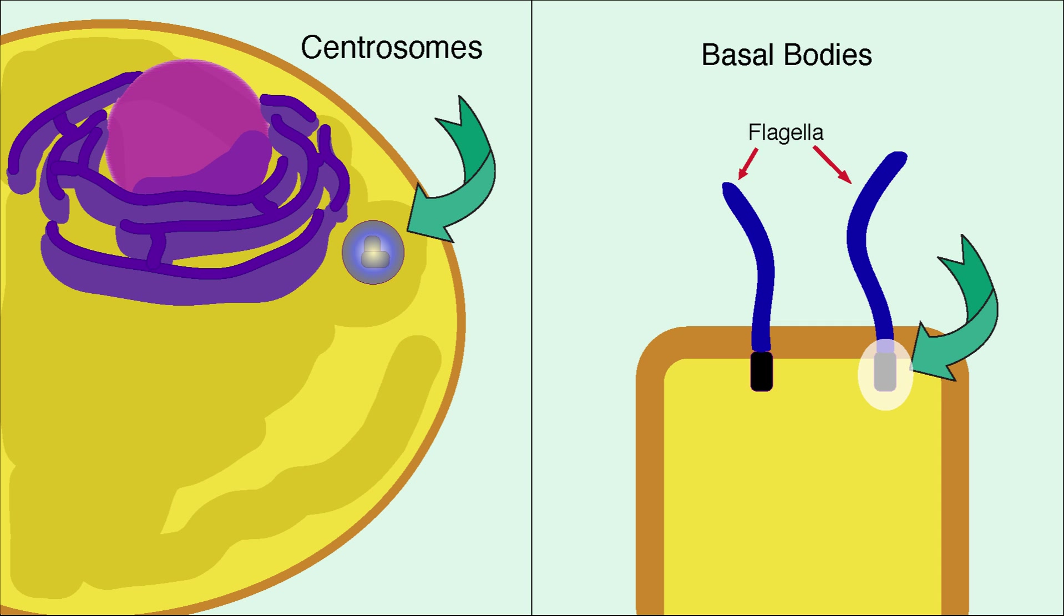Now let's take a closer look at the two main types of microtubule organizing centers: centrosomes found near the nucleus and basal bodies, found at the cell membrane.